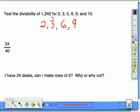And for 10, it ends in a 2. It does not end in a 0, so it's not divisible by 10. So 1,242 is divisible by 2, 3, 6, and 9. The 5 did not work and the 10 did not work.